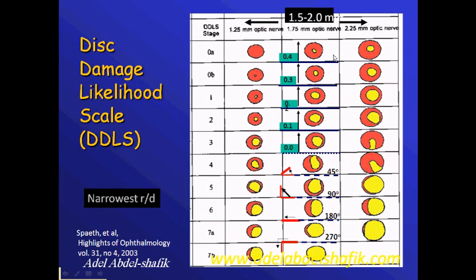As you see here, stage one has neural tissue more than four but less than five. The next stage is between three and four, then between two and three, then between one and two, then between zero and one. After that, you start the zero area: less than 45 degrees, more than 45 but less than 90, more than 90 but less than 180, up to 270 degrees. This is the idea of the classification, and this is for the average disc size.